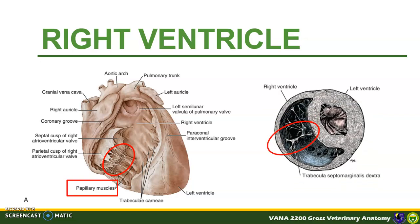The right ventricle also possesses the trabecula septomarginalis, or moderator band, which connects the right wall of the right ventricle to the interventricular septum, preventing over-pumping of the ventricle. At the right ventricle, we can also see the right atrioventricular valve — the tricuspid valve — which has three cusps, hence its name.